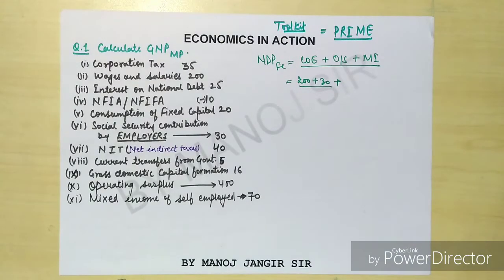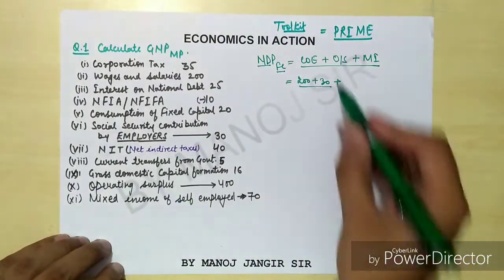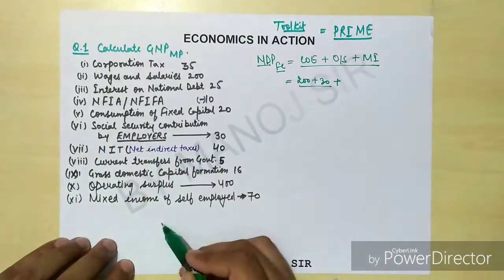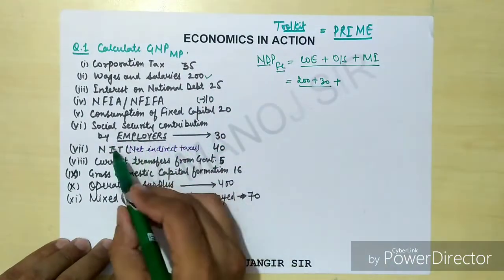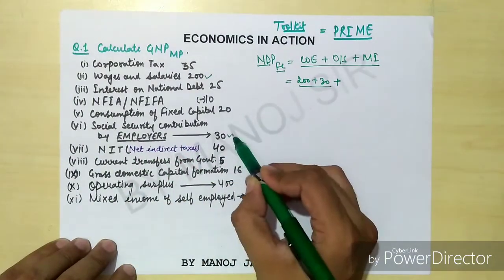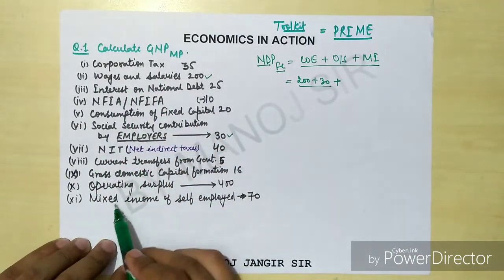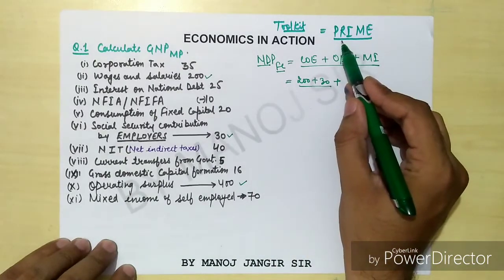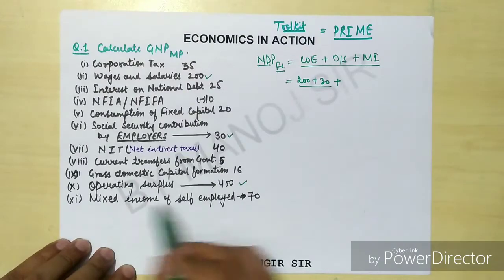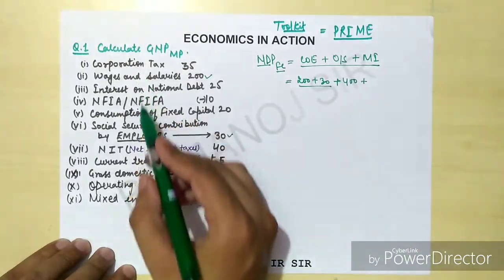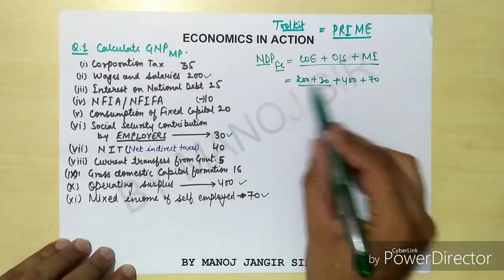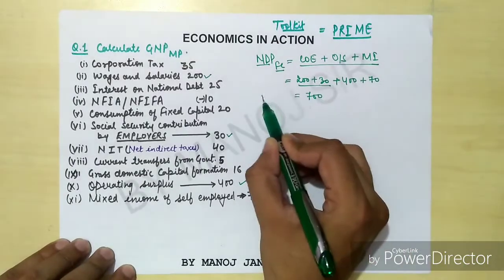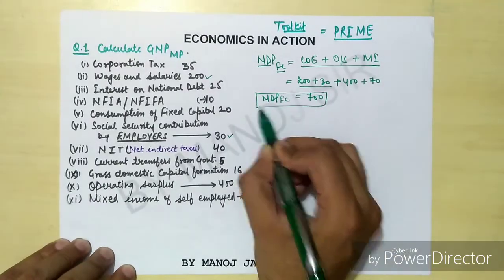Let's solve a numerical. We need NDPFC. For COE, wages and salaries are given, plus social security contribution by employers is 30. Operating surplus is given as 400. Mixed income (MI) is 70. Adding 400 plus 200 plus something gives us NDPFC of 700.